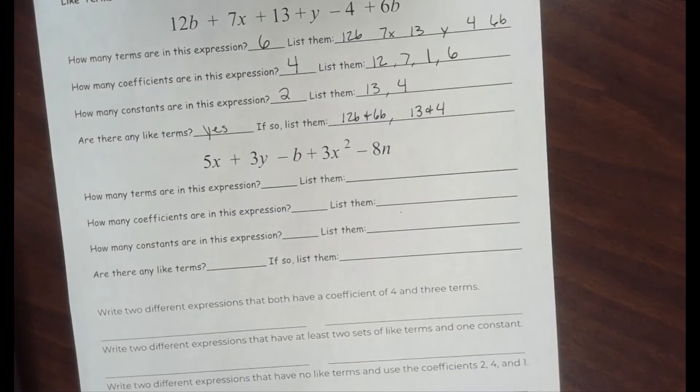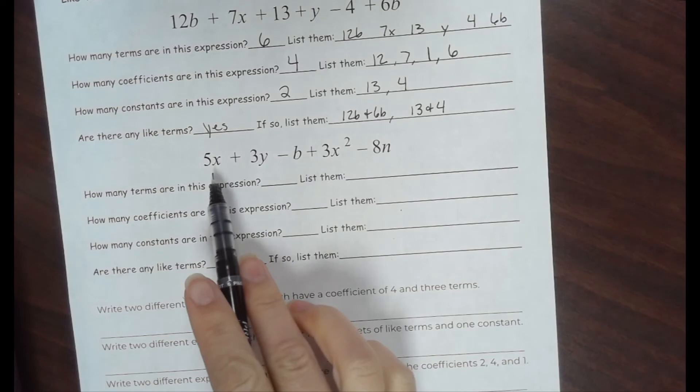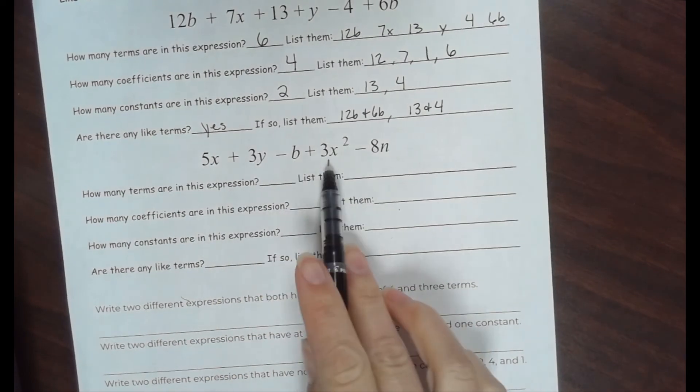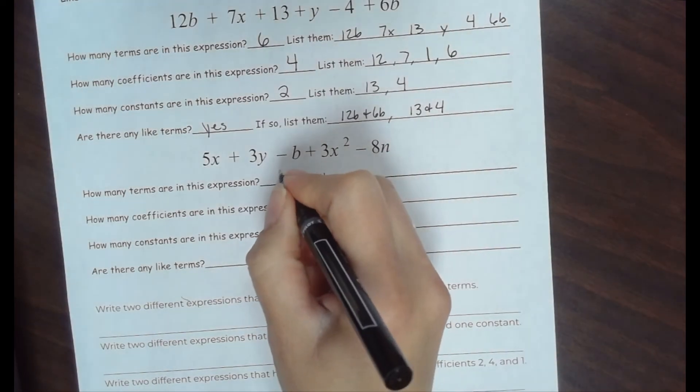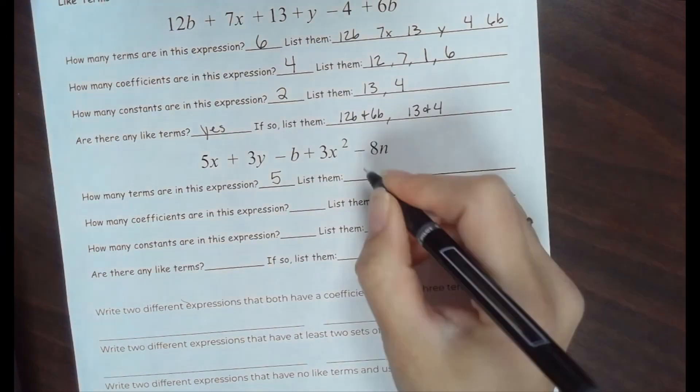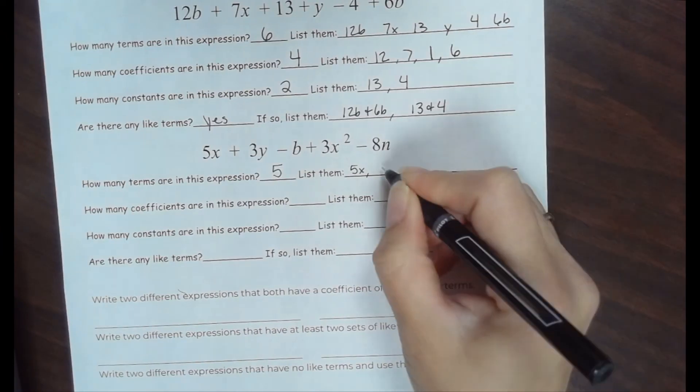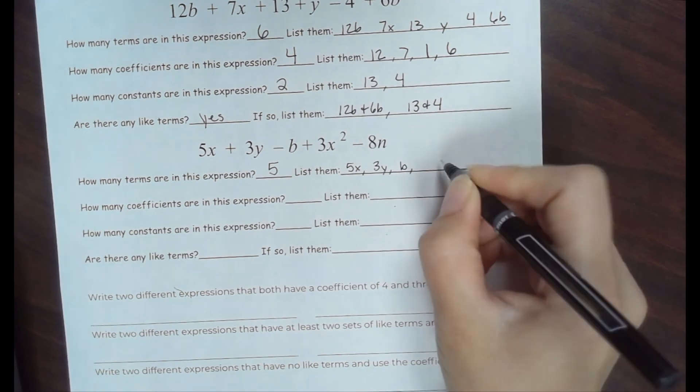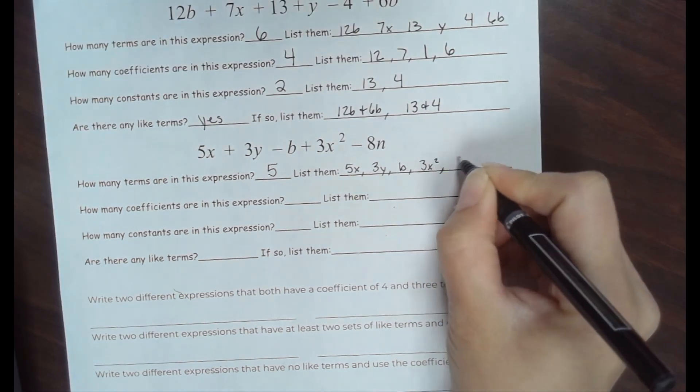Let's try this one. How many terms are in this expression? 1, 2, 3, 4, 5. There are five items separated by plus or minus signs. If we list them, we have 5x, 3y, -b, 3x squared, and -8n.